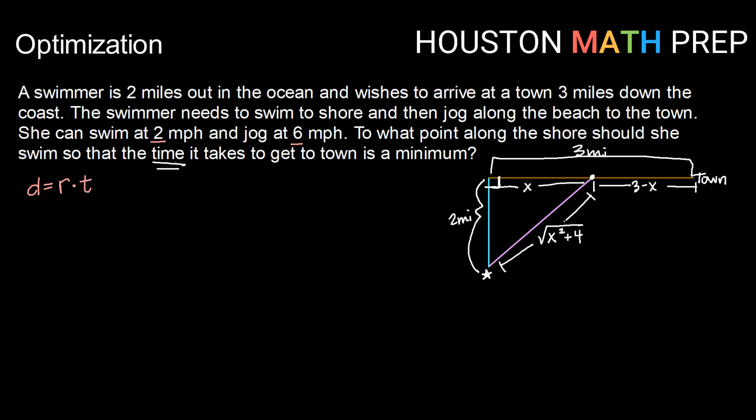We would like that equation in terms of time. So dividing both sides by r, we get that time is equal to distance over rate. So our swimmer here is going to have to swim part of her trip, and then she's going to have to jog the other part of her trip. So we're going to think in terms of swim and then in terms of jog.